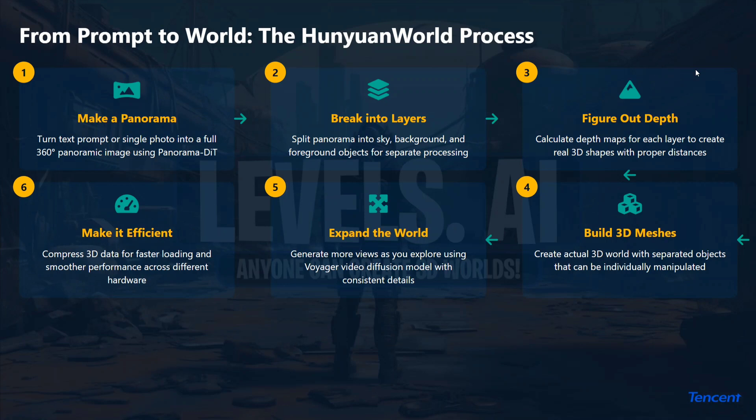To simplify: first, text prompts or images are turned into a full 360 panorama using Panorama DiT. Then the panorama is broken into layers — sky, background, foreground objects. Next, depth is calculated with a depth map for each layer. Finally, the world is expanded by generating more views as you explore using the Voyager video diffuser, and 3D meshes are built. The technical report is also available if you want more detail.